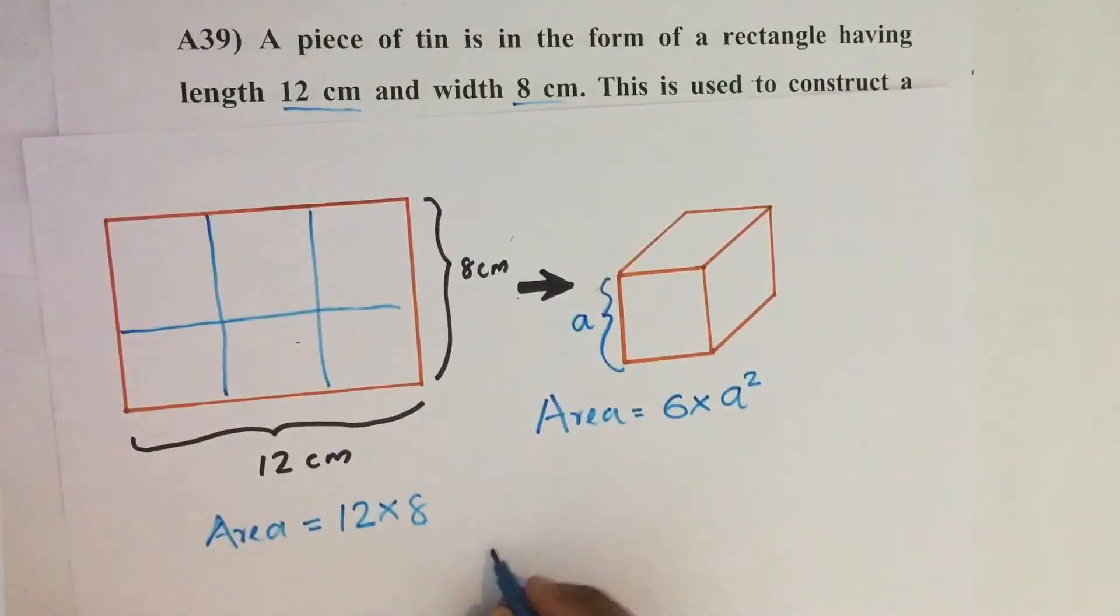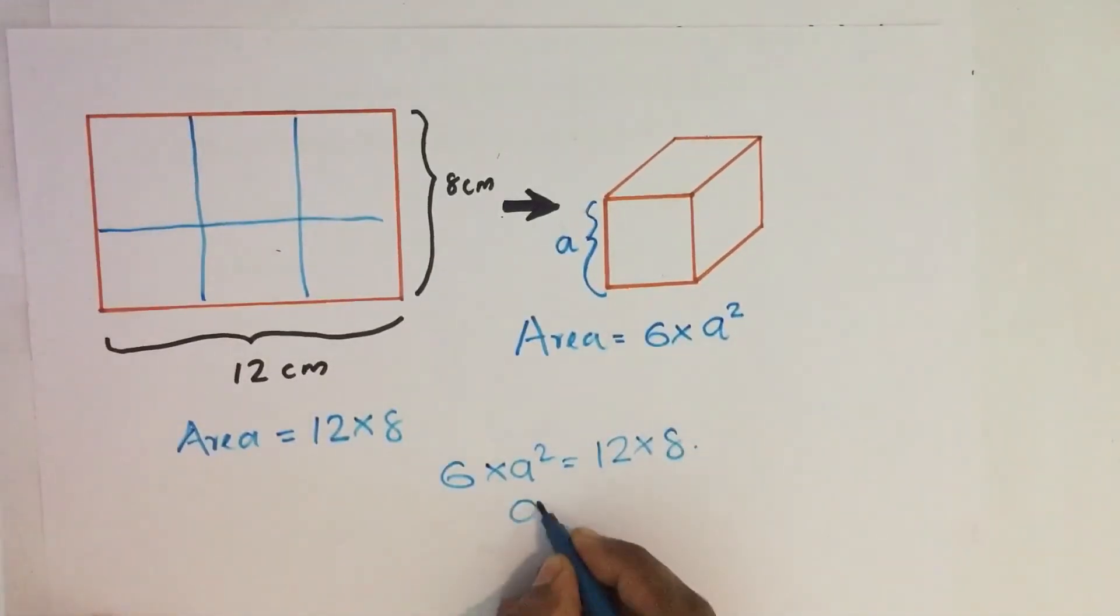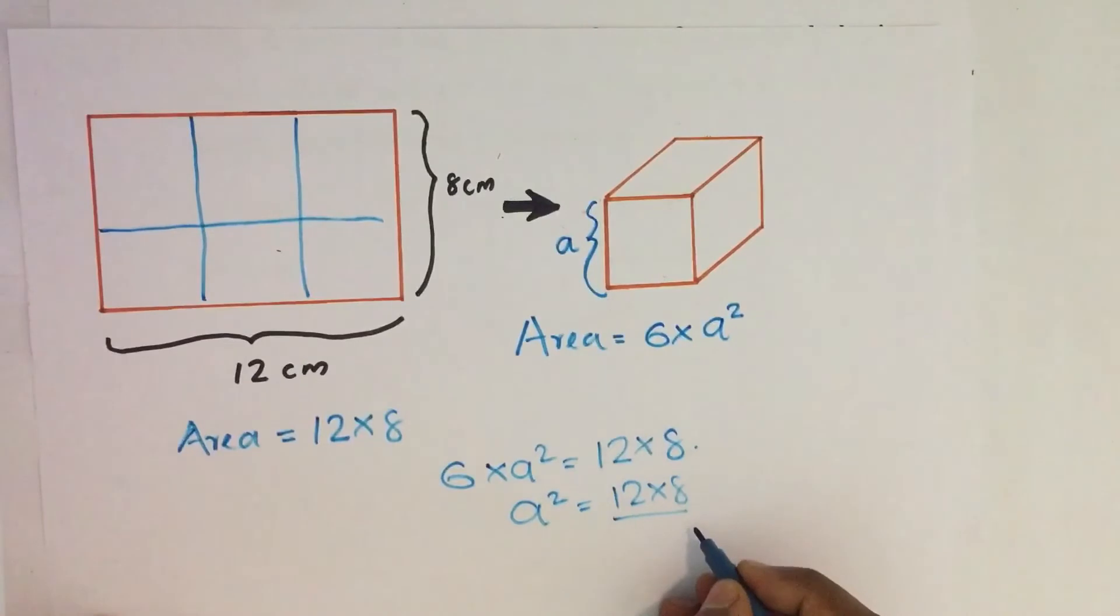So by equating these two, 6A square equals 12 into 8. A square equals 12 into 8. I am taking this 6 to the right side, then it becomes divided by 6. Then 2, 6, or 12.